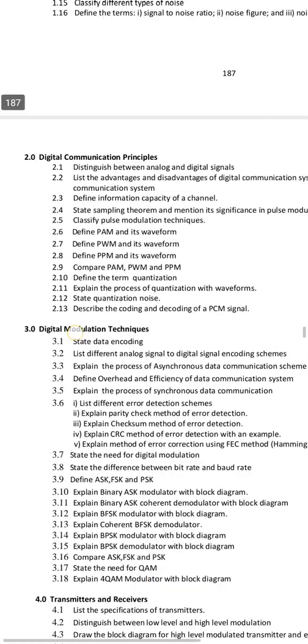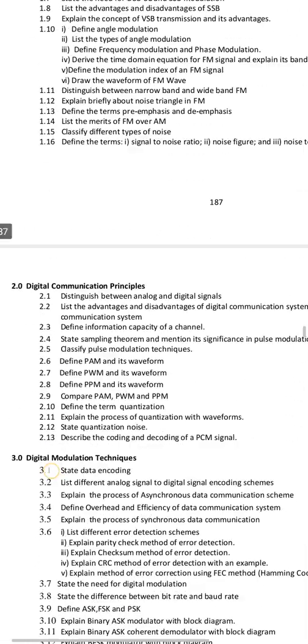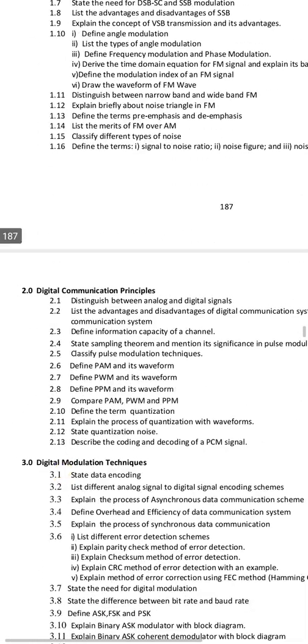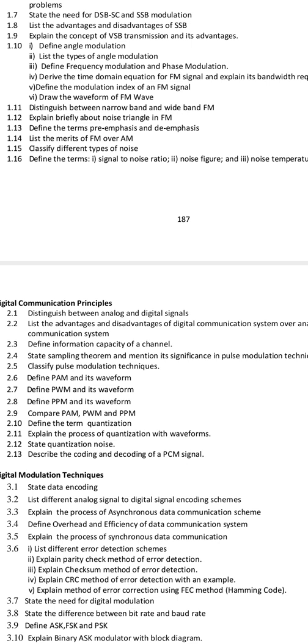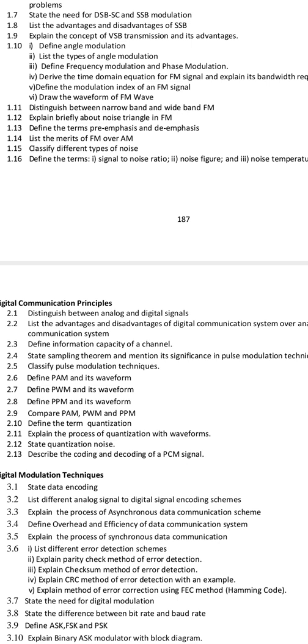Now for the second chapter — Chapter 3 is only 10 marks. In the second chapter, you will take the advantages and disadvantages of digital communication systems over analog communication systems. This is a big question.